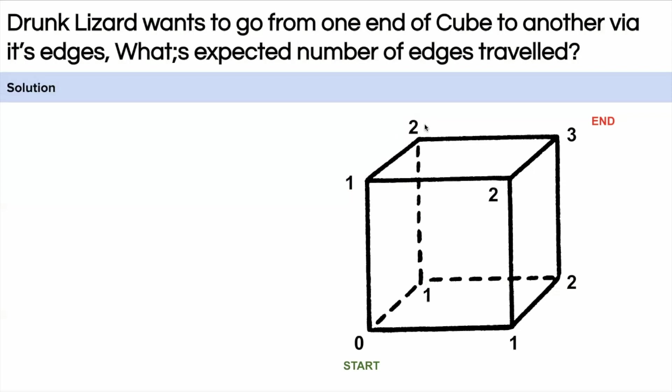Similarly if the lizard is at number two it can move to two ones and the three, and finally if the lizard is at three the lizard has already reached the end point.